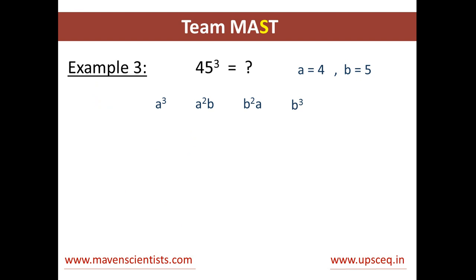Now we calculate the values of the expressions. We get a³ equals 64, a²b equals 16 into 5 which is 80, ab² equals 25 into 4 which is 100, and then b³ equals 125. So now we get the values 64, 80, 100, and 125.